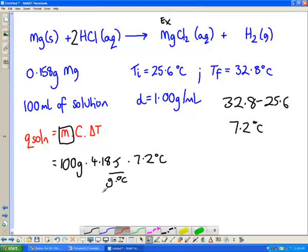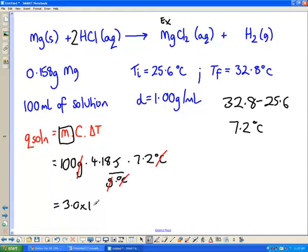Now before we go any further, let's just check. This is an energy term, so we want units of energy left. The only energy term here is joules. So everything else should cancel out - grams, degrees C. Everything else cancels so we're left with joules. Lovely. So let's calculate the Q for the solution, which ends up being 3.0 times 10 to the third joules.